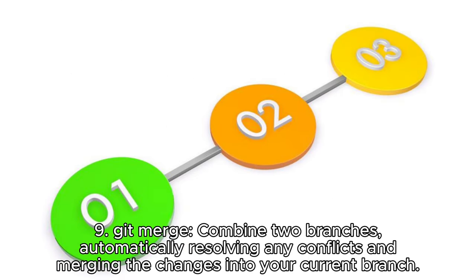9. Git merge — combine two branches, automatically resolving any conflicts and merging the changes into your current branch.